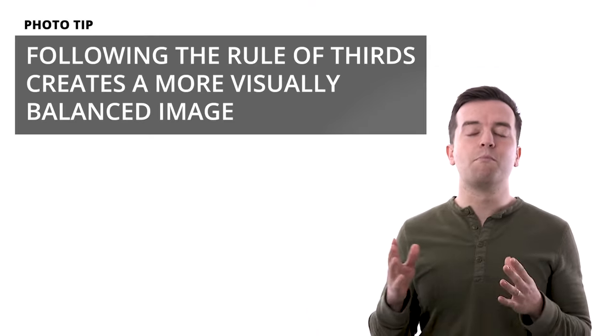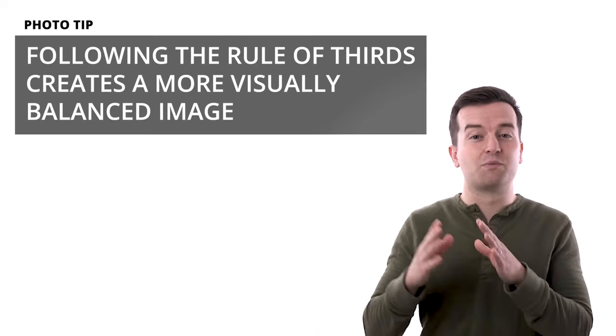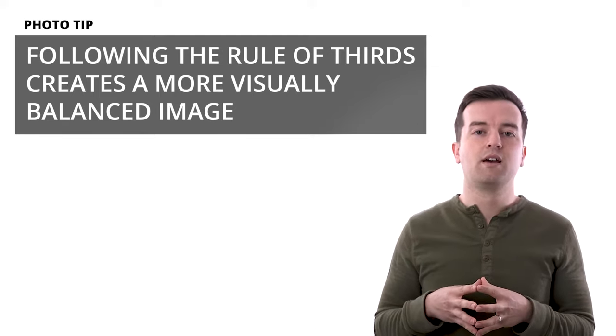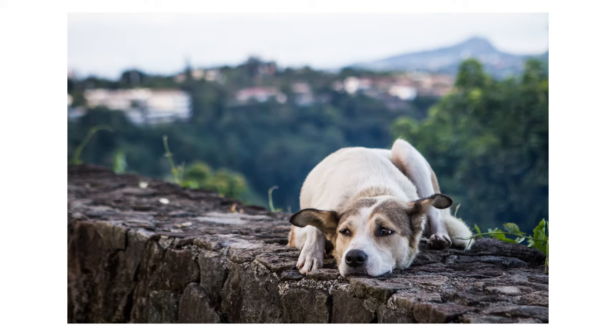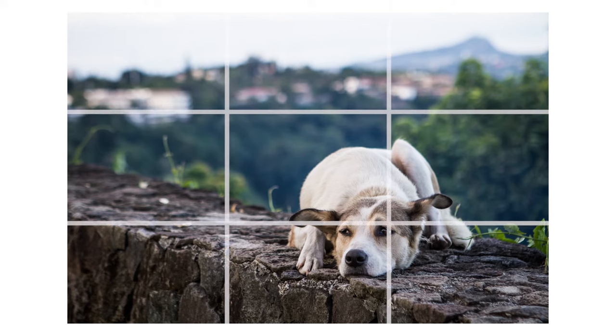Centering your subject is the natural thing to do, but to create a more balanced photo that is more pleasing to the viewer's eye, following the rule of thirds can help. This means placing the subject of your photo to the left or right of the center of the frame — more specifically, overlaying your frame with two horizontal and two vertical lines, and placing your subject near the intersection of these lines.